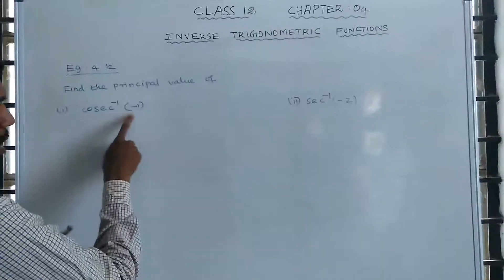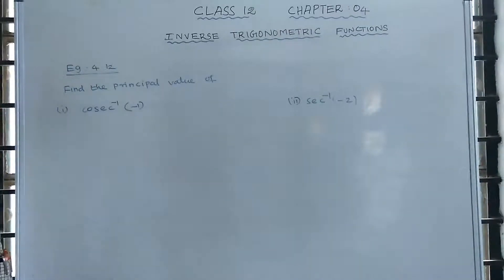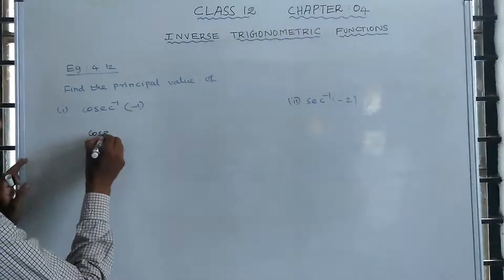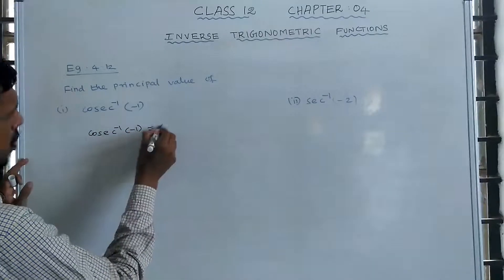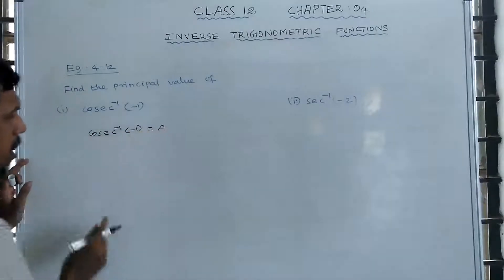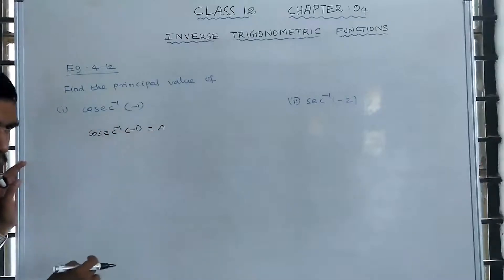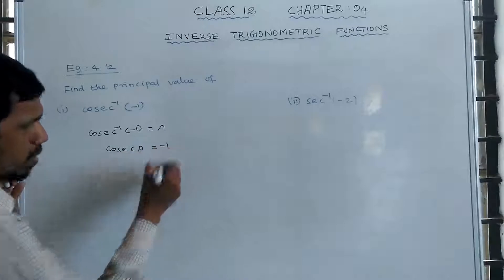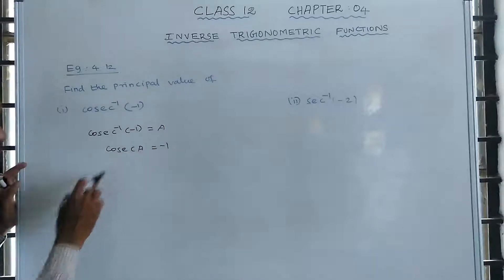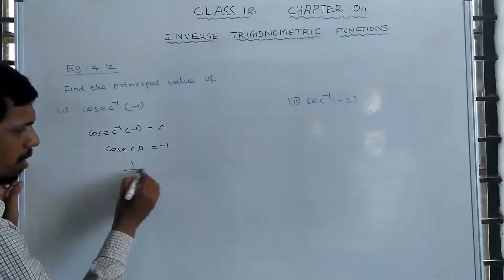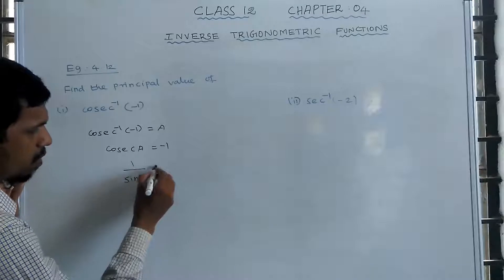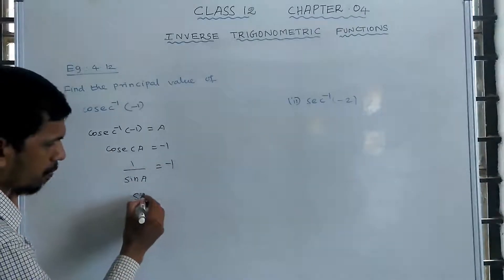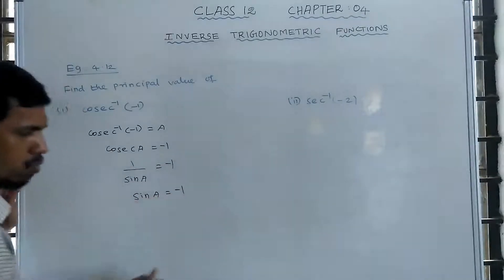So, for what angle — let's say cosecant inverse of minus 1 is equal to a. So cosecant a equals minus 1, which means 1 divided by sin a equals minus 1. Taking the reciprocal, therefore, sin a equals minus 1.